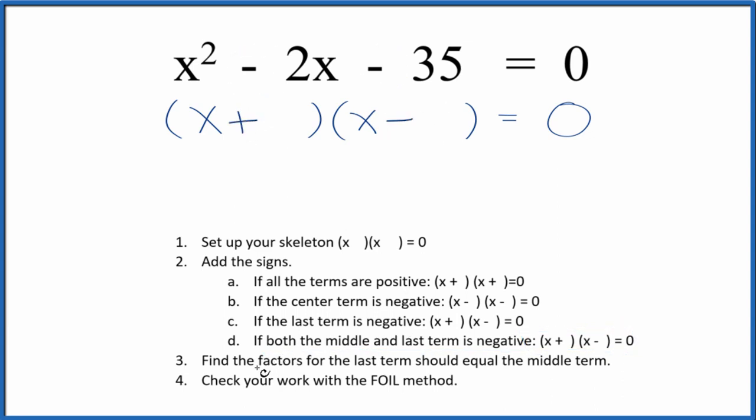At this point, we can find the factors for the last term, that's the negative 35, that equal the middle term, that's the negative 2. If you think about 35, the factors of 35, 1 times 35, that's not going to equal the negative 2. 7 times 5, that could work because if we put a 7 here and a 5 here, 5 and 7 gives us negative 2. So these should be the factors for x squared minus 2x minus 35.